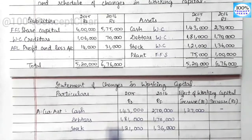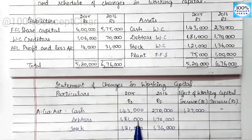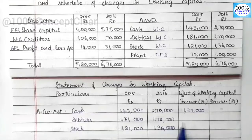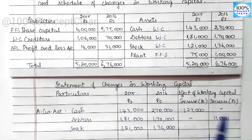Next, looking at debtors: in this year the amount of decrease is higher. We have an 11,000 decrease, so we note 11,000 in the decrease column.